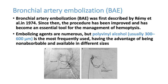Bronchial artery embolization is the major treatment for massive hemoptysis. Once the patient is stabilized, they should be subjected to bronchial artery embolization. A commonly used embolization agent is polyvinyl alcohol, which is used to block the artery producing the bleeding. Before embolization, CT or CT angiography is required to find the exact position of the bleed.